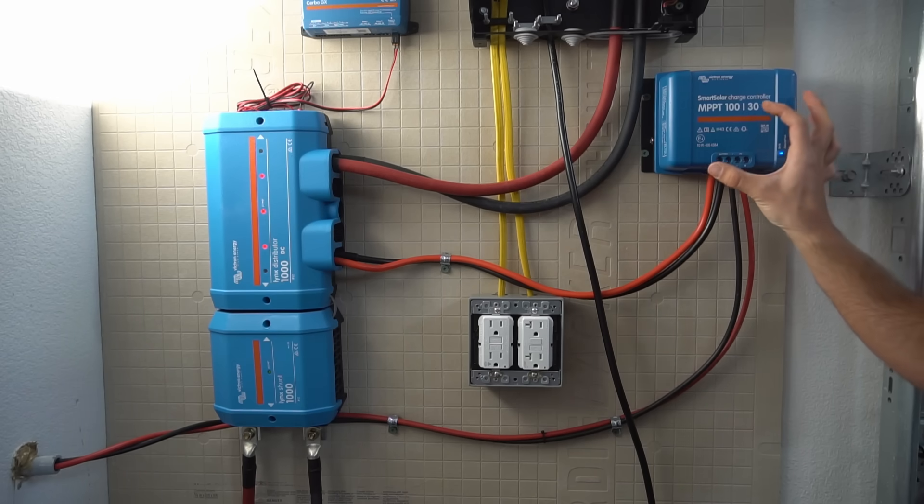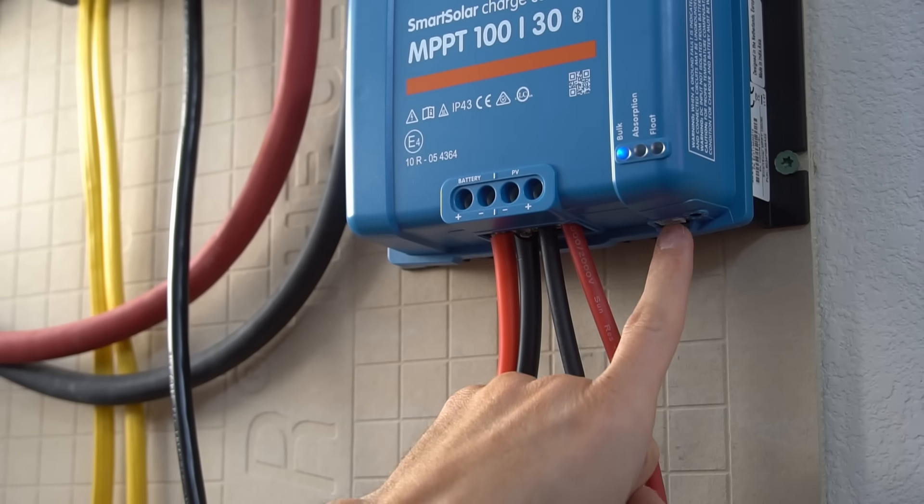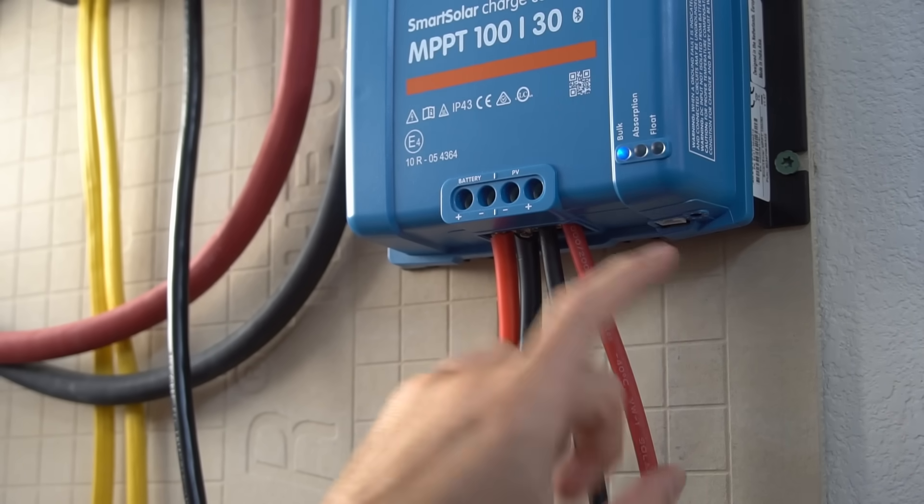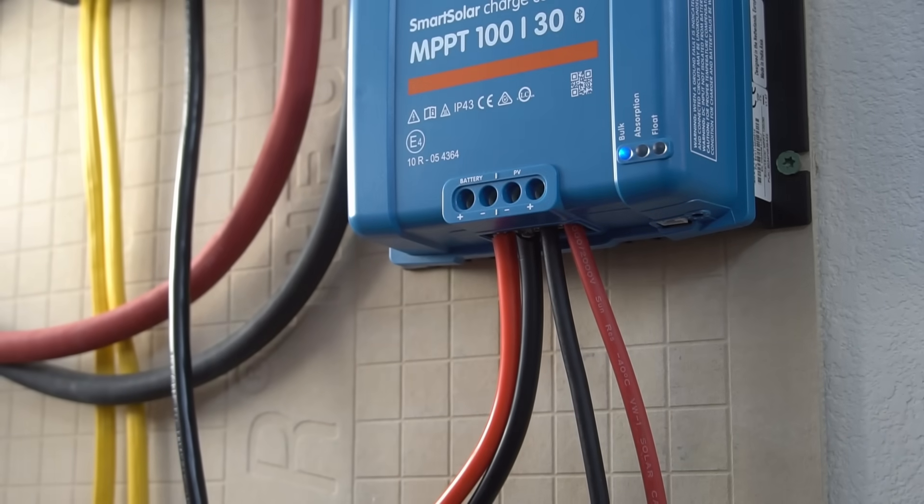And then the 30 is how much in amps this thing can push into your battery bank. And this controller can only work with 12 and 24 volt battery banks. And then over here you have a communication port. This is where you add the cable so that this unit can communicate with everything else.